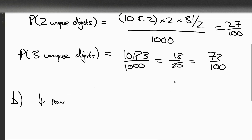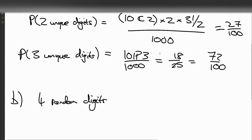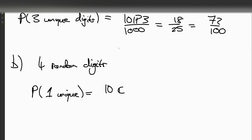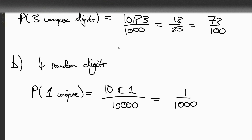Part B: if we have four random digits, then our probability of having one unique digit is going to be ten choose one — that's our number of ways of choosing our digit — and then there's no ways of permuting them because they're all the same, and we just divide by ten thousand, so that's one over a thousand.